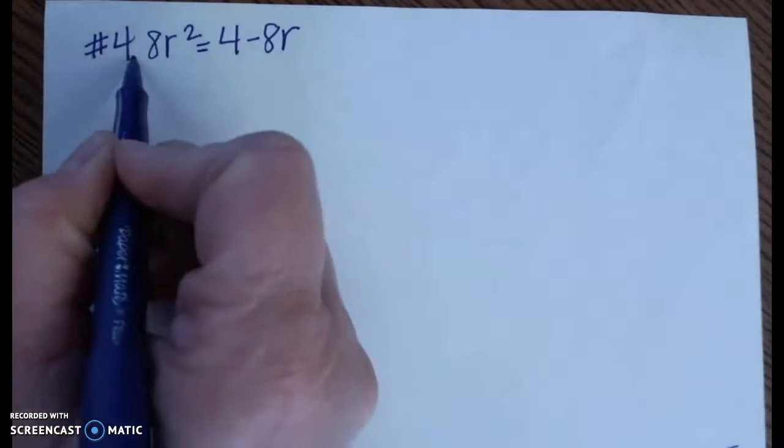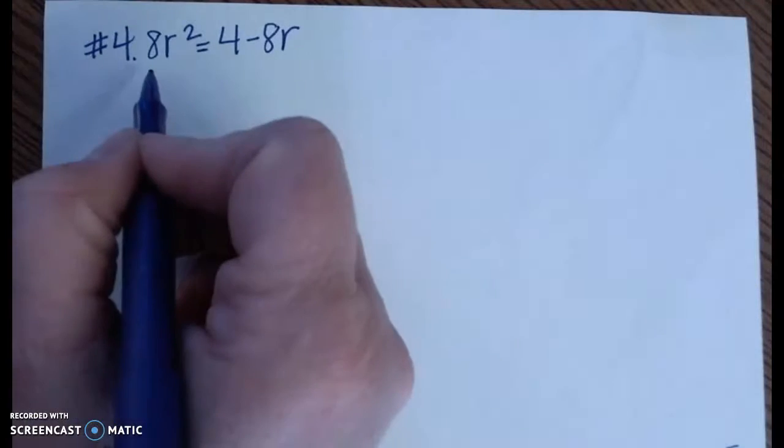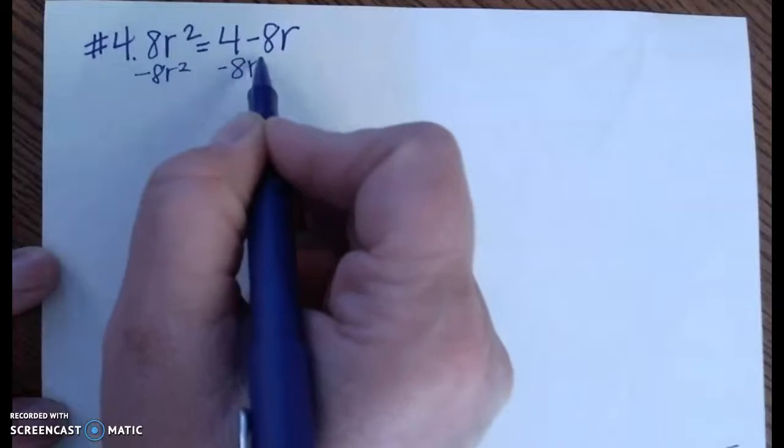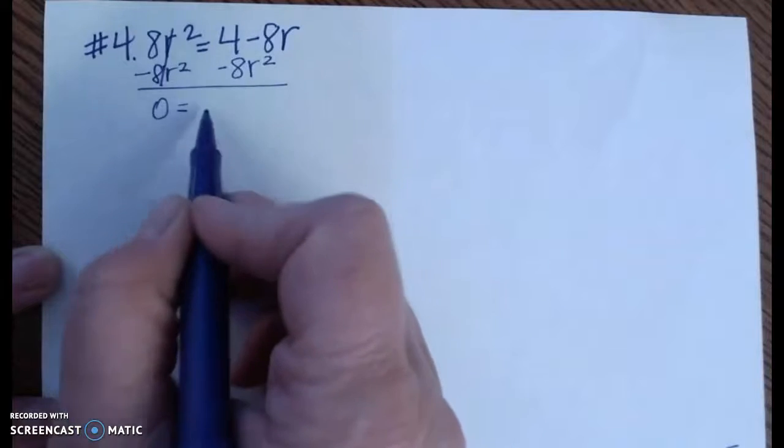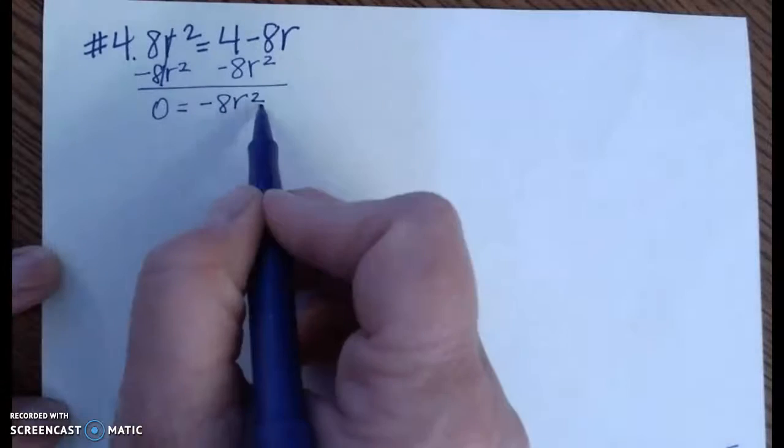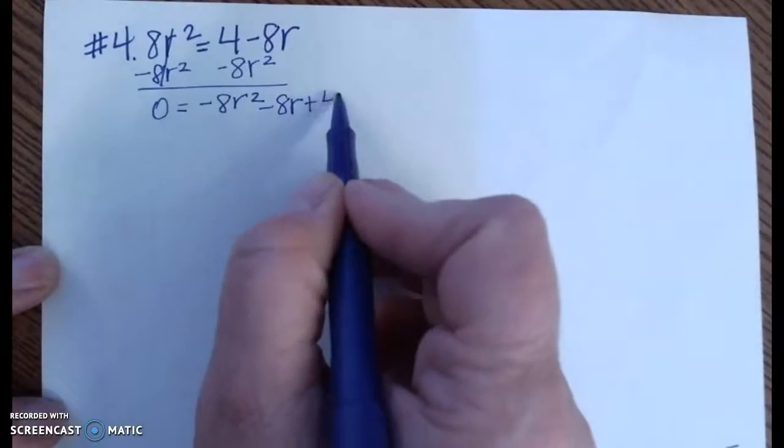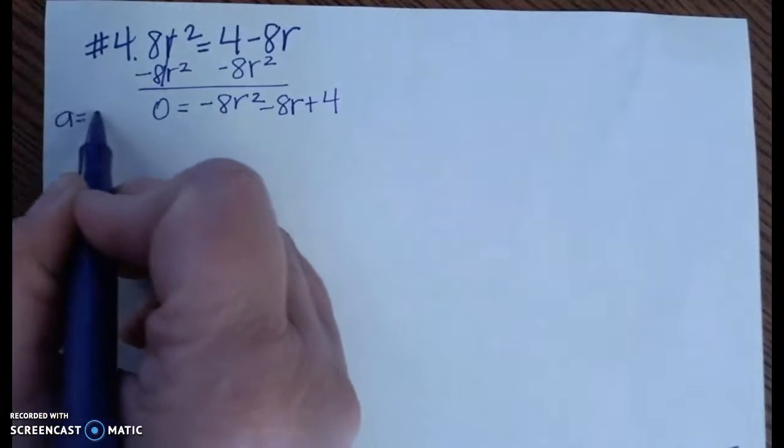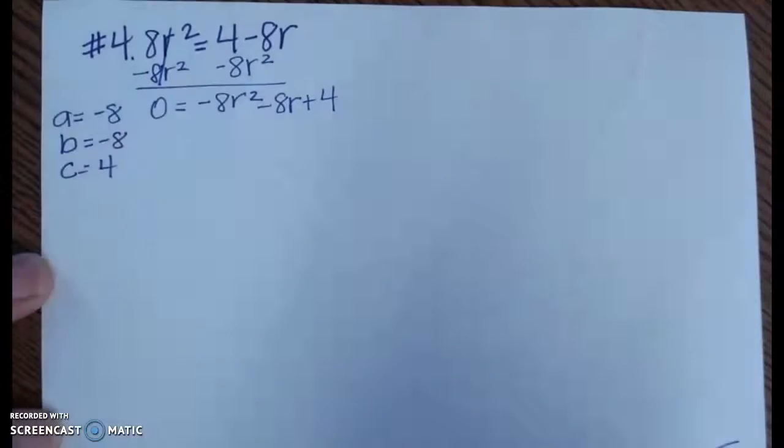So number 4, I have 8r² = 4 - 8r. This is not in standard form. I need everything to be on the same side of the equals. So I'm going to move this 8r² to the other side, so it cancels it here, leaving 0. And 8r squared, that's my ax² value, so it's going to go first. Minus 8r is my b value, and my c value is 4. That's a positive 4 because there's no sign in front of it. Okay, so now I'm in standard form. I can pull out a, b, and c. a is negative 8, b is also negative 8, and c is positive 4.